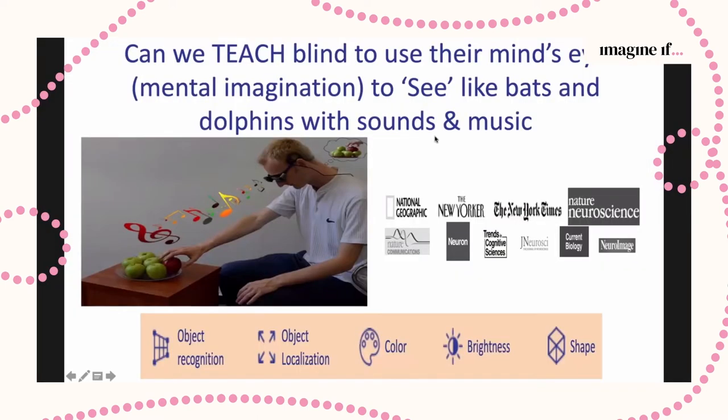I would start by showing you a project on mental imagination in which we use the new technology we developed in the lab called the iMusic. This technology captures images for blind people — for example, here looking at apples — and translates them into sounds and music. Just like bats and dolphins create an image based on spectrogram, blind people use their mental imagination to see in their mind's eye what's in front of them and operate on it.